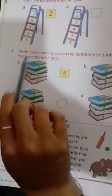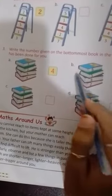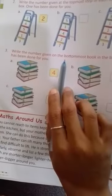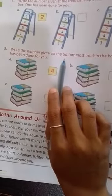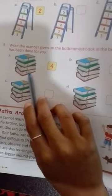Next question 3. Write the number given on the bottommost book in the box. One has been done for you. Just like here we wrote topmost, meaning the top number, similarly here the books are shown with numbers written on them, you have to find bottommost. Bottommost means the last number. As you can see, one is completed here for you, it's done.